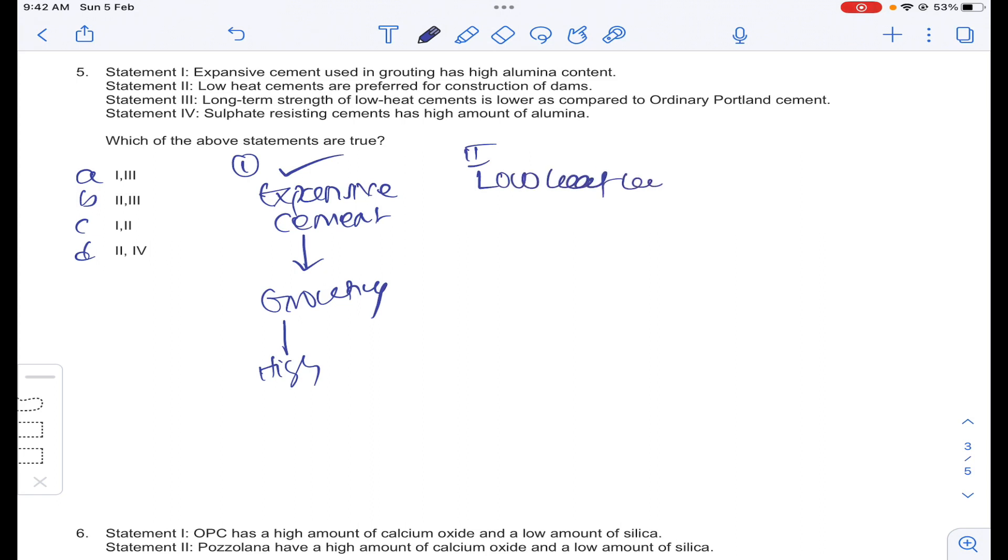Low heat cement are preferable for construction of dams. Low heat cement having high C2S, low C3S. Whenever C2S is more and C3S is less, the development of heat is low in the starting stages and C2S will contribute later strength. Statement 2 is also correct. And long third statement, long term strength of low heat cement is lower compared to ordinary Portland cement. Low heat cement OPC final strength is same. This is wrong.